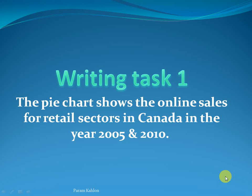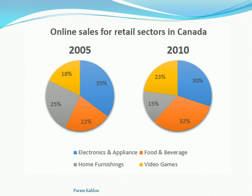Good morning. Today I'm going to discuss Writing Task One. The topic is a pie chart showing online sales for the retail sector in Canada in 2005 and 2010. The pie chart describes four sectors: electronics, food, video games, and furniture. As you can see, food and video games percentages increase over the period.